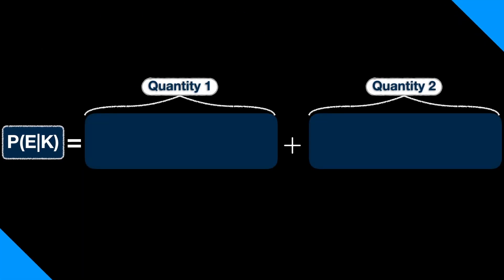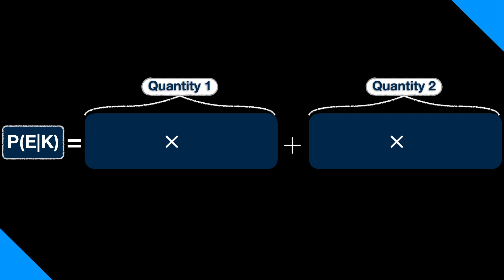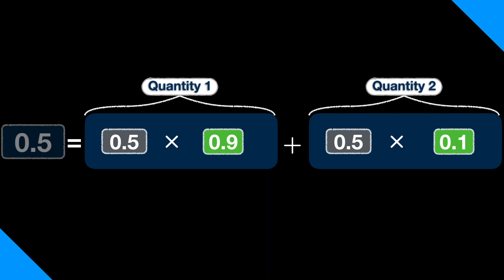To do that, we have to add together two quantities. The first quantity is the prior probability that you would pick the vase with mostly red marbles, multiplied by the probability that you would draw a red marble, supposing you picked the vase with mostly red marbles. The second quantity is the prior probability that you chose the vase with mostly blue marbles, multiplied by the probability that you chose a red marble, supposing you picked the vase with mostly blue marbles in it. Plug in these values, and you find that the probability of the evidence given your background knowledge is one half.